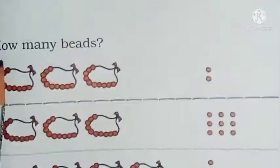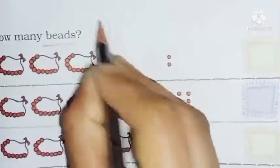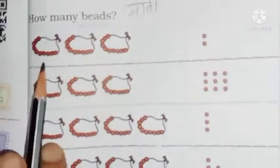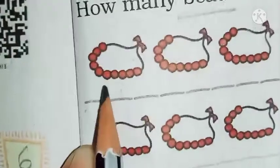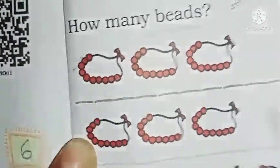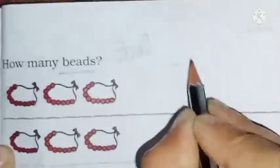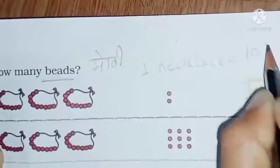Now next, page number 130. So in page 130, what is there? How many beads? Beads means pearls — मोती. So how many beads are there? So children, one necklace — how many beads are in a necklace? Look: 1, 2, 3, 4, 5, 6, 7, 8, 9, 10. So in one necklace there are 10 beads.